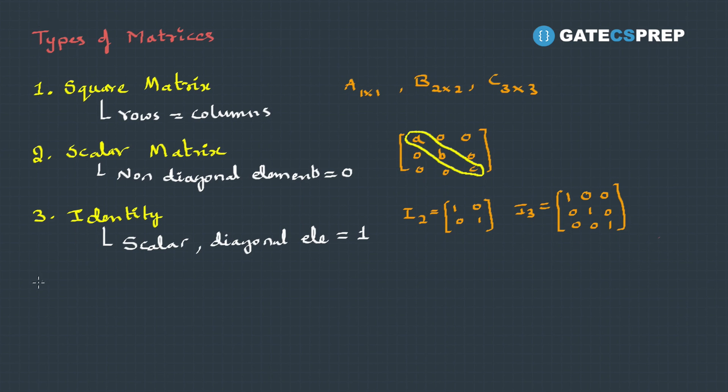The fourth type is a null matrix where all elements are zeros. This is a null matrix of order 2, and this is a null matrix of order 3.